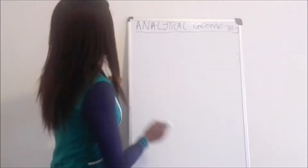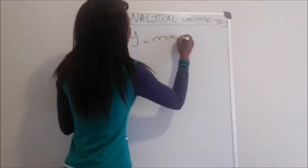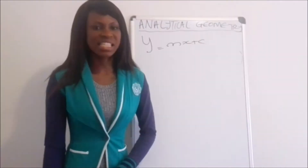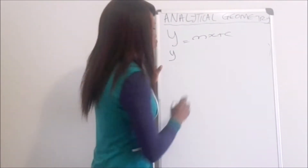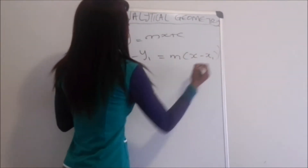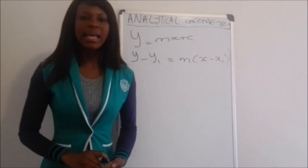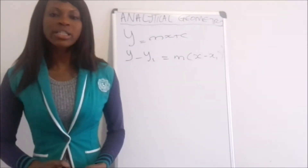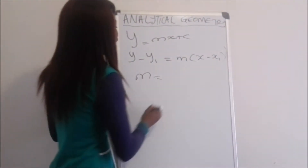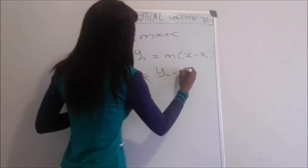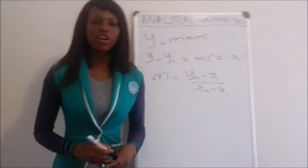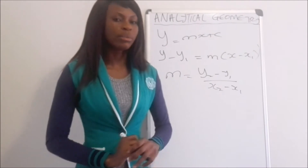Let me just write those equations down. We have y = mx + c, where m is the gradient of the line and c is the y-intercept. Another equation is y − y₁ = m(x − x₁), where m is still the gradient and (x₁, y₁) is the coordinate of a point on the line. To find the gradient m, we use m = (y₂ − y₁) / (x₂ − x₁), where those are the coordinates of the two points on the line.